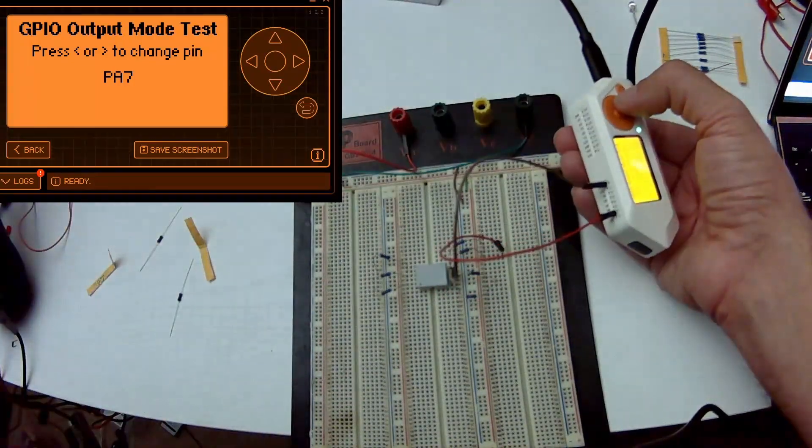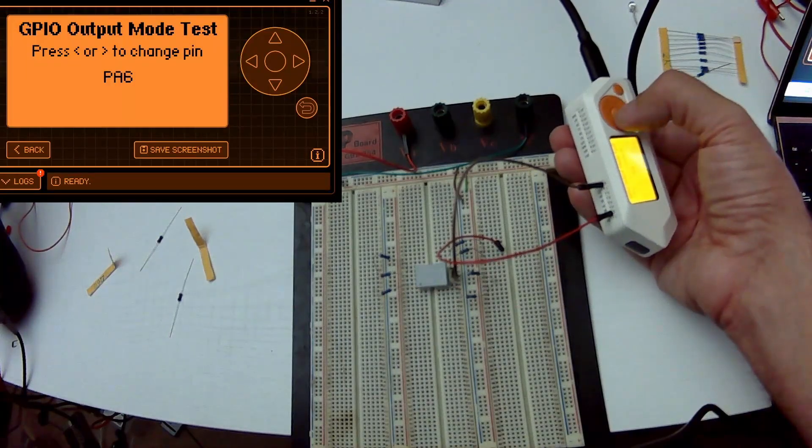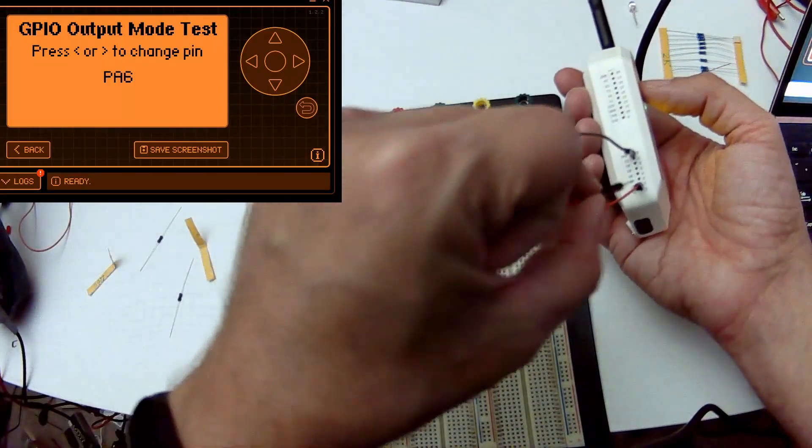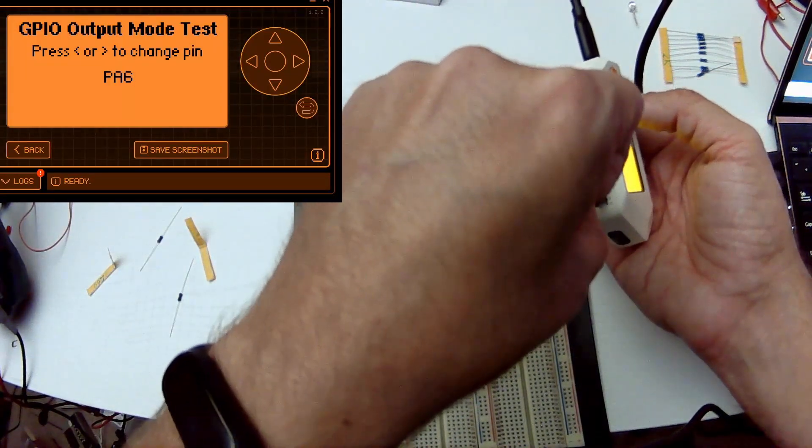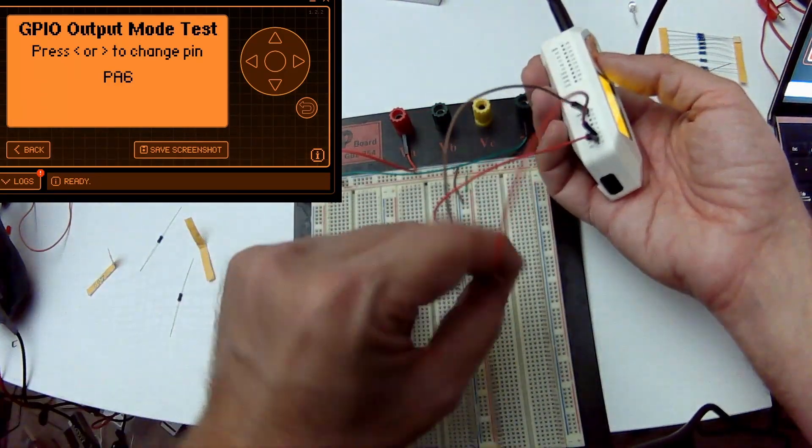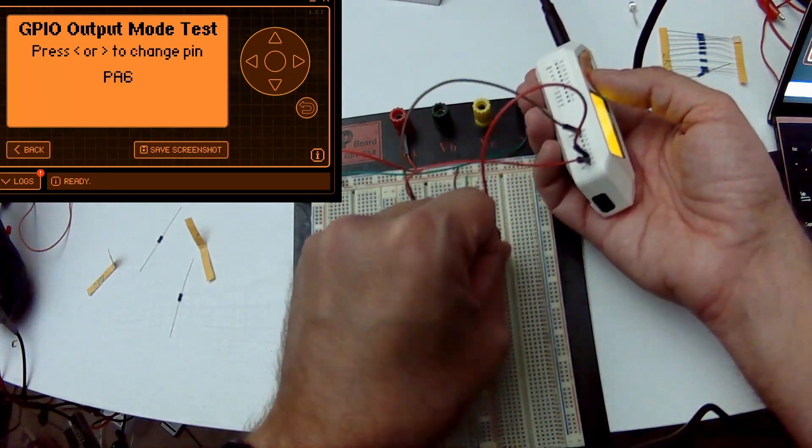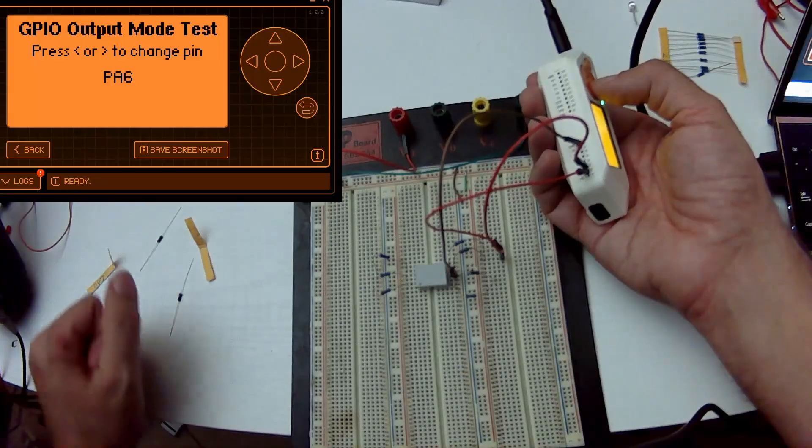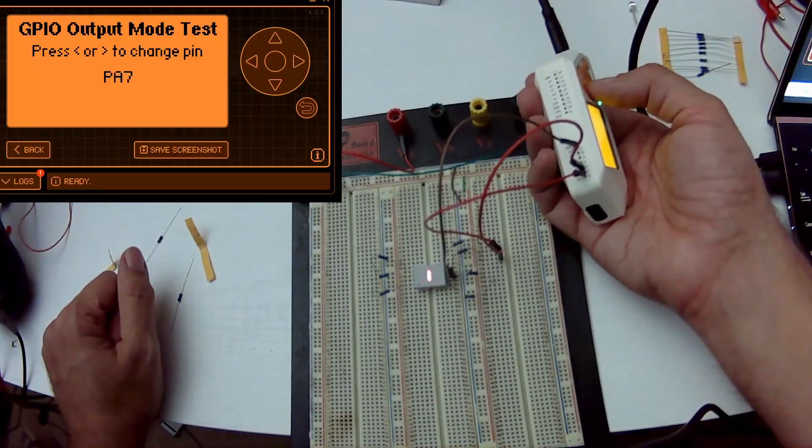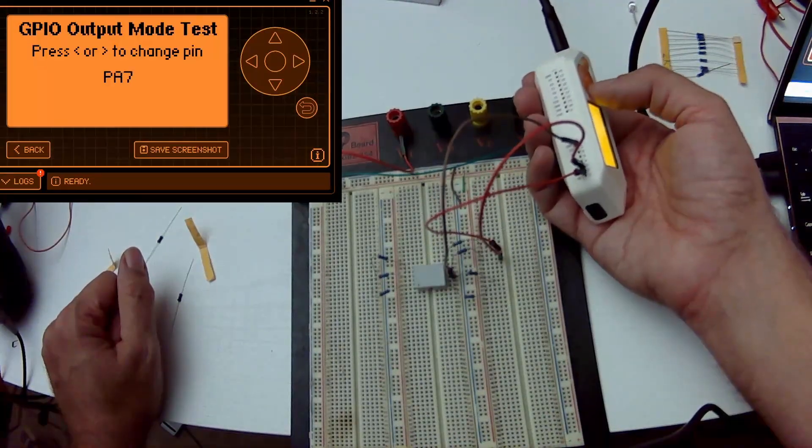We'll press the right arrow key, which will switch it to PA6, which is this next pin here. So we'll plug a wire into PA6 and connect the other end to the next resistor. Pressing the OK button, now we're able to light the next segment. And if we go back, we can light the previous segment.